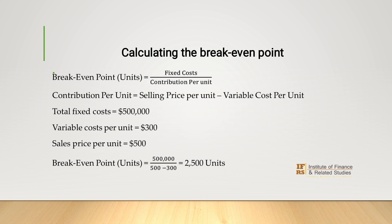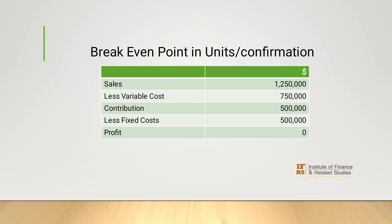Let's take an example. Consider the total fixed cost of a firm is half a million dollars, the variable cost per unit is $300, and the sales price per unit is $500. The break-even point in units would be fixed cost — half a million — divided by contribution per unit, which is $200. Therefore, the break-even point in units is 250,000 units.